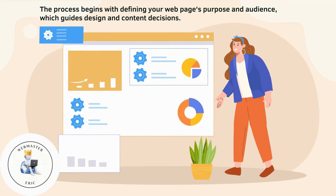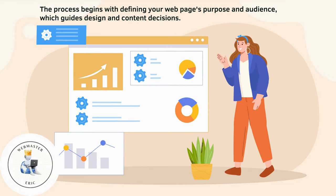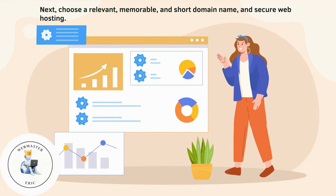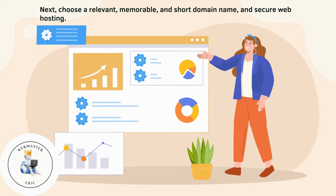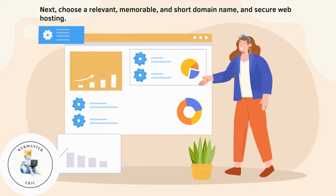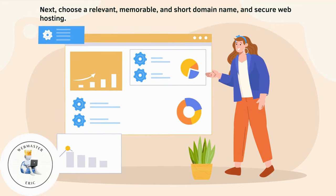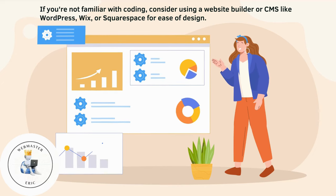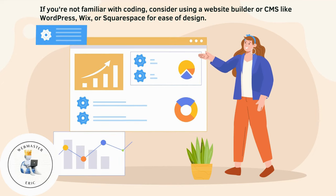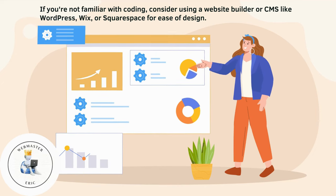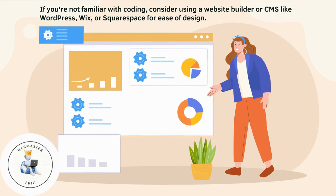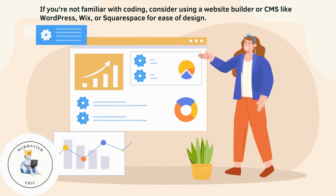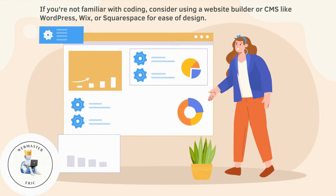Defining your purpose and audience guides design and content decisions. Next, choose a relevant, memorable, and short domain name, and secure web hosting. If you're not familiar with coding, consider using a website builder or CMS like WordPress, Wix, or Squarespace for ease of design.